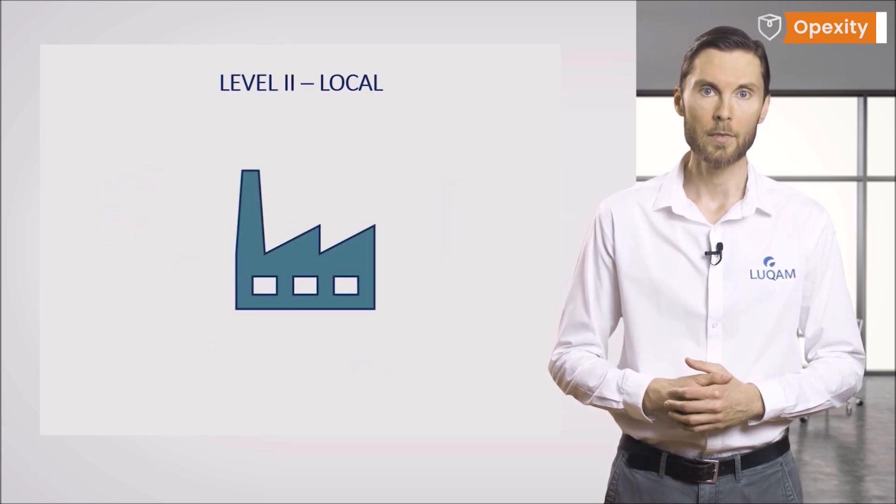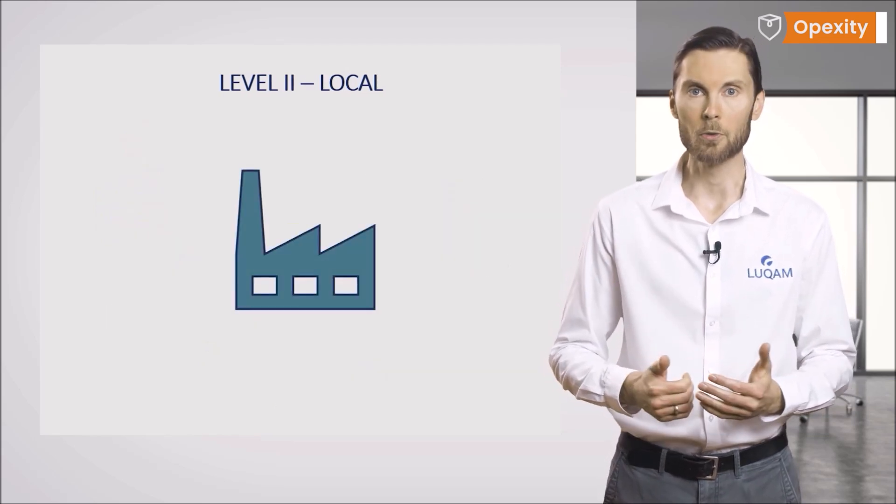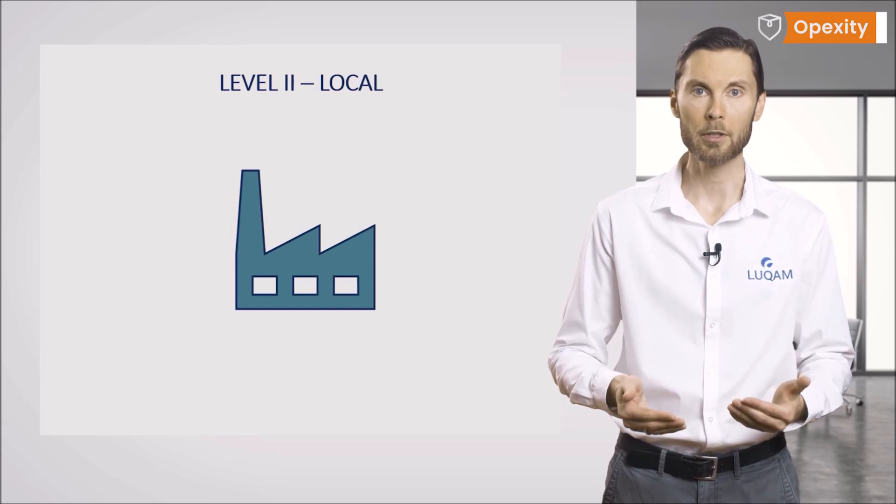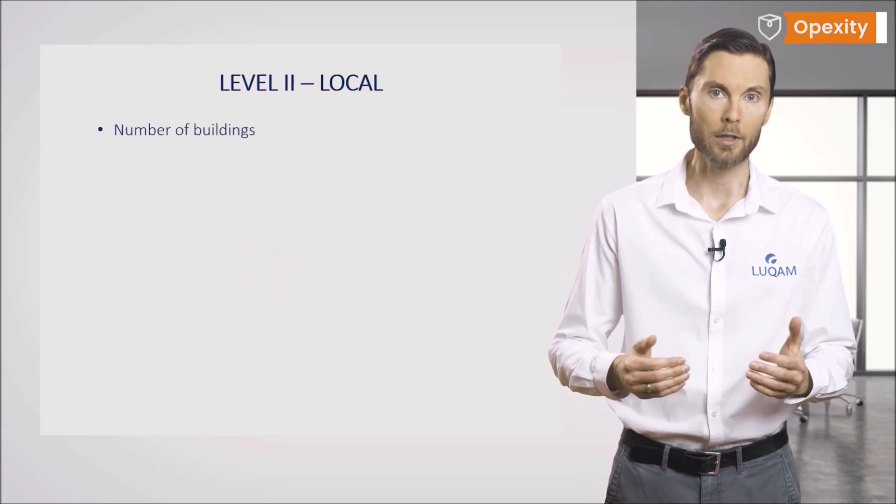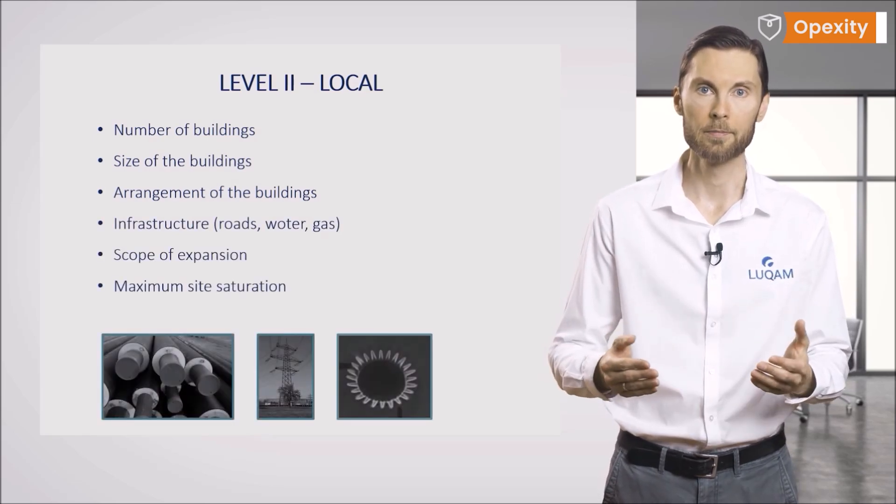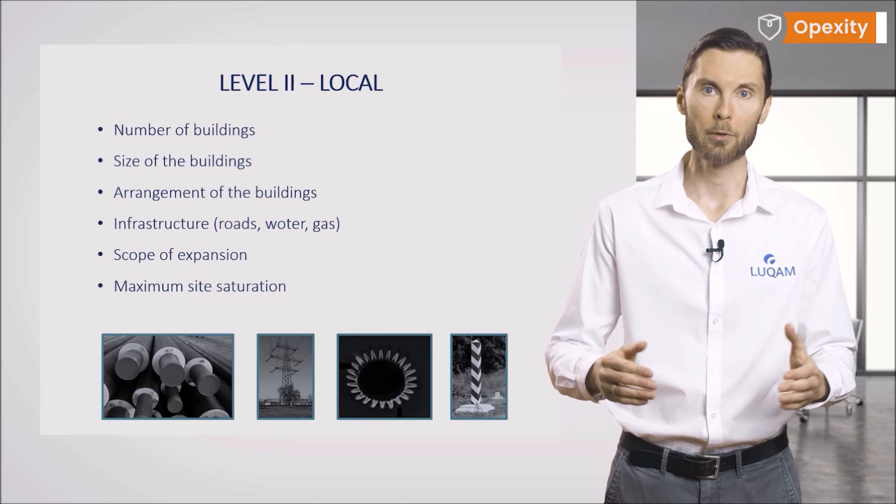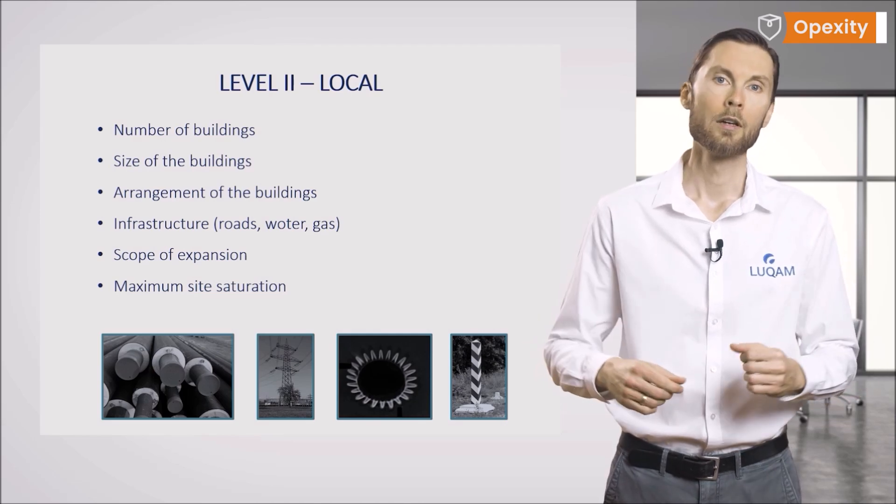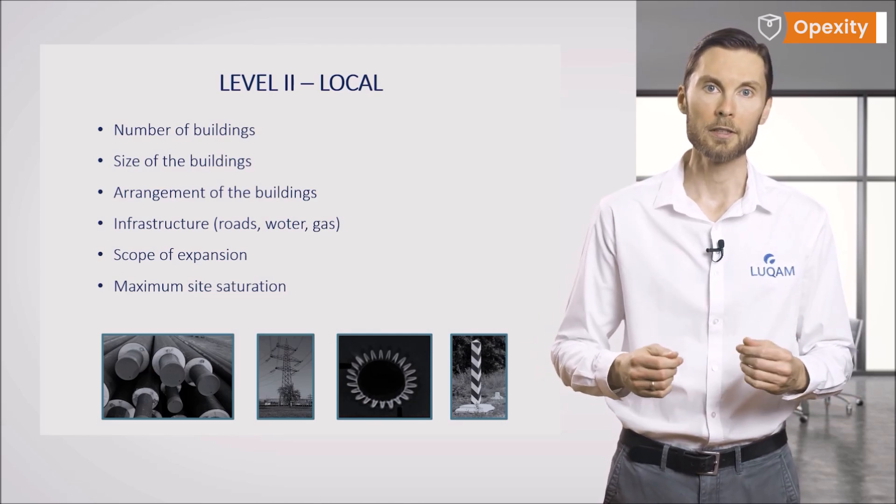The second level is the local level. We already know where we want to be building our factory. At the local level, we plan the site development. We identify the buildings we need. We determine their number and prearrangement.